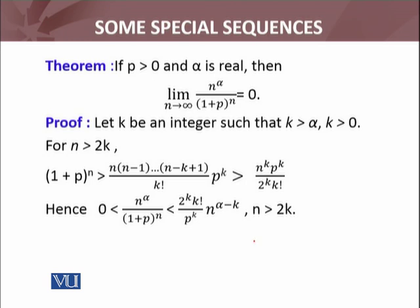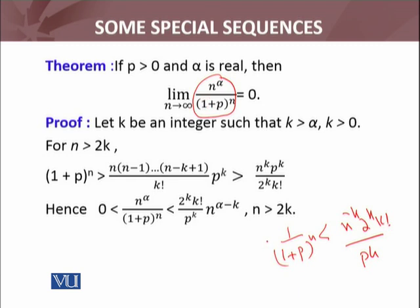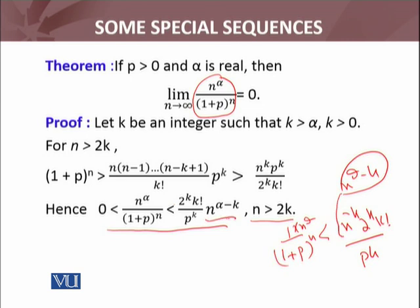From the inequality 1/(1+p)^n < n^(−k) · 2^k · k! / p^k, and since n^α > 0 for n > 2k, multiplying both sides by n^α gives: n^α/(1+p)^n < 2^k · k! · n^(α−k) / p^k. This is valid for n ≥ 2k.